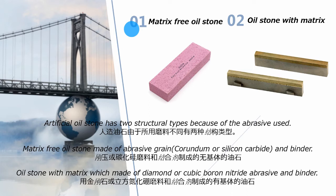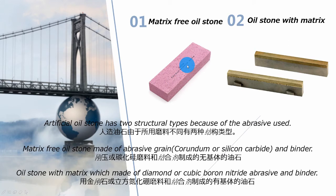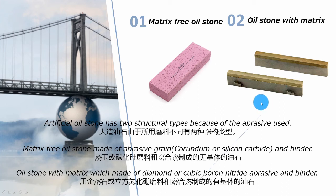Oilstone has two structural types based on the abrasive used. One type is oilstone made of abrasive grain and binder. Another type is oilstone with a matrix, which is made of diamond or CBN and the binder. This is the matrix.